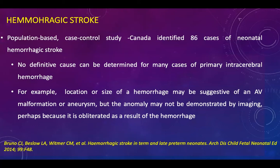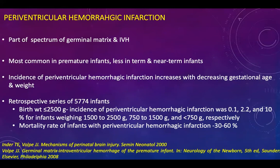In a population-based case-control study, 86 cases of neonatal hemorrhagic stroke were identified, and no definitive cause could be determined for many cases of primary intracerebral hemorrhage. Periventricular hemorrhagic infarction is part of the spectrum of germinal matrix and intraventricular hemorrhage. It is more common in premature infants. In a series of more than 5,000 infants, lower birth weight was associated with higher incidence of periventricular hemorrhagic infarction.